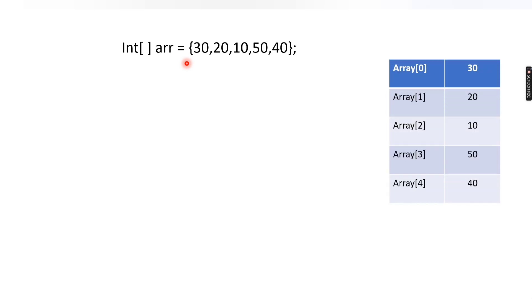Let's say we have an array of integer data type and the elements present in the array are 30, 20, 10, 50, and 40. We have already learned how array elements are stored inside the array — they are stored as per the index position. So at index 0 the first element is 30, at index 1 the element is 20, and so on.